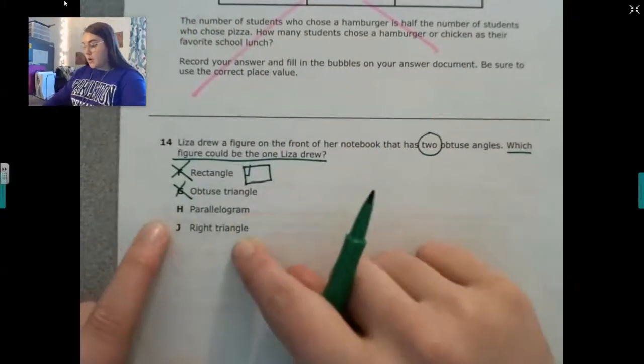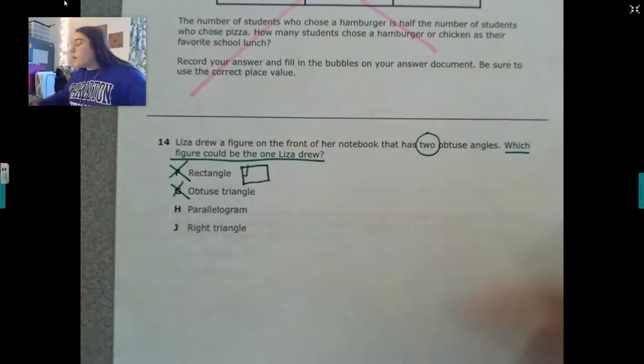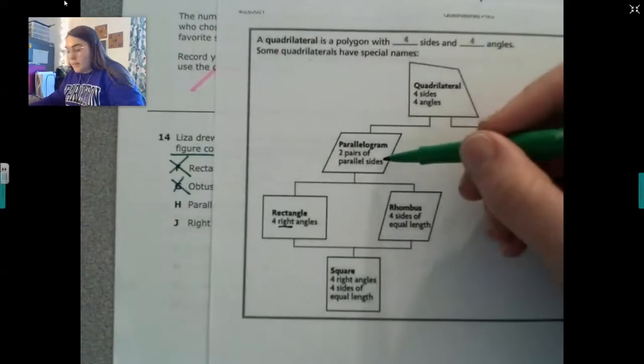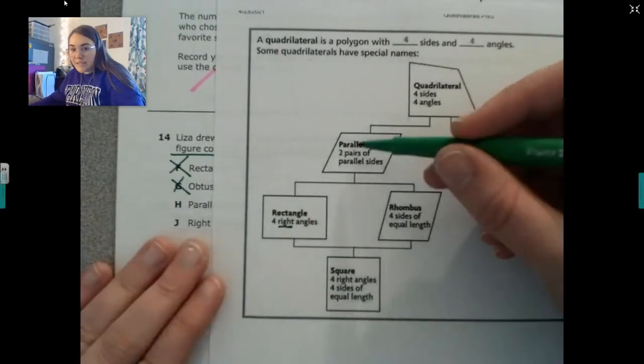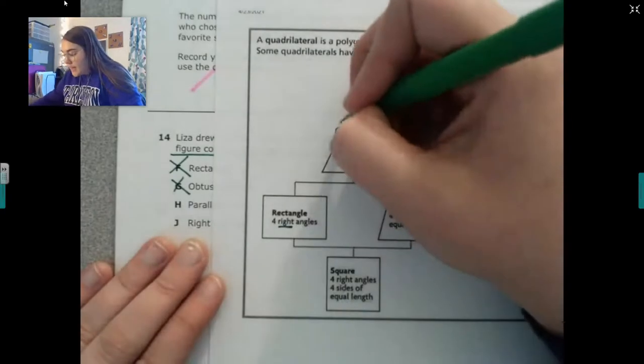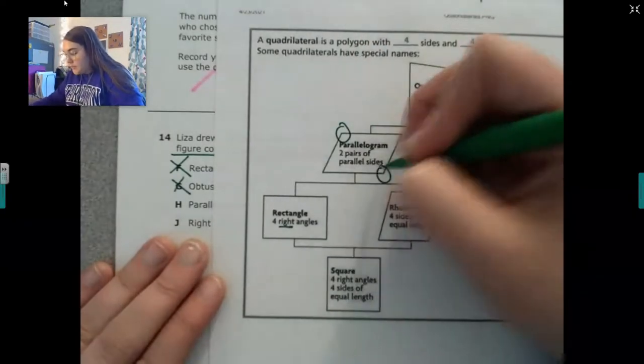A parallelogram. I don't know. Remember a parallelogram. All that is said about a parallelogram is it has two pairs of parallel sides. And to me, this looks like obtuse and this looks obtuse. So maybe.